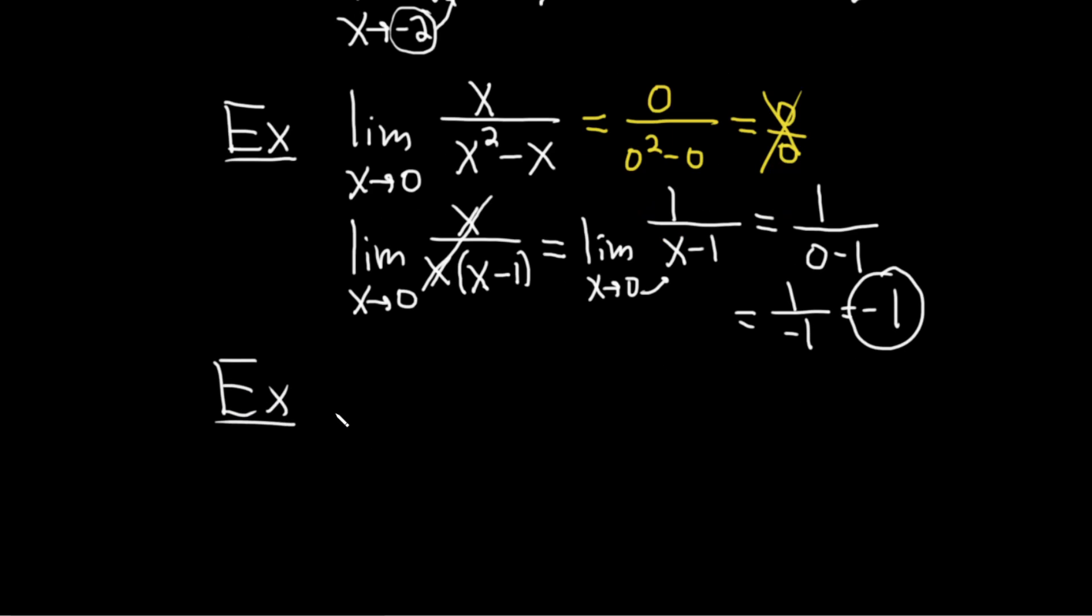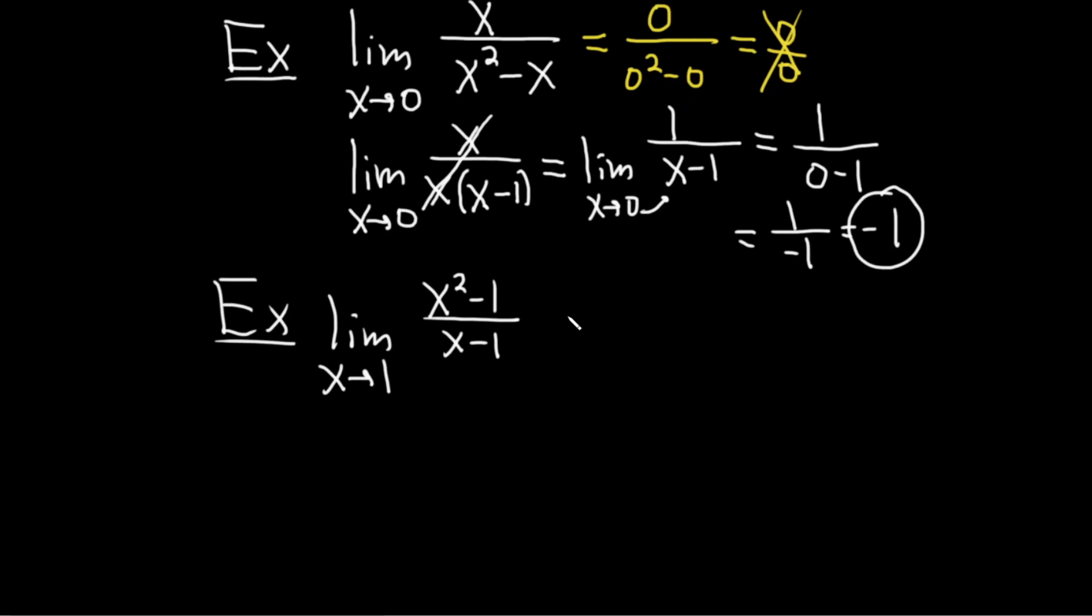Let's do another one. Let's take the limit as x approaches 1 of x squared minus 1 over x minus 1. So, again, first thing you always want to try is you want to try to plug in that number. So let's plug in 1. That's going to give us 1 squared minus 1 over and then 1 minus 1. 1 squared is 1, so again, you get 0 over 0. That's no good. In mathematics, you cannot have 0 on the bottom. It's not allowed. So we'll try something else. And that something else is, again, factoring.